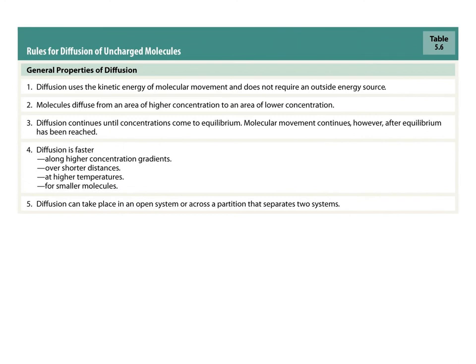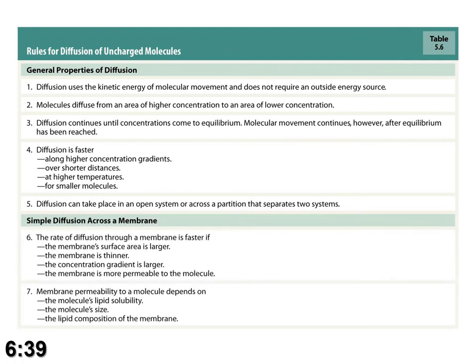A useful chart from Silverthorn, Table 5.6, Chapter 5, lists exactly the factors that influence diffusion, so you should be able to predict what will happen if conditions change. We now need to apply these rules to biological systems and specifically to biological membranes. The first thing to remember is that biological membranes have a hydrophobic core, and membranes can also vary in thickness. This brings us to Fick's Law.